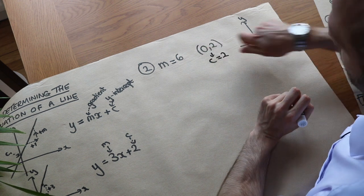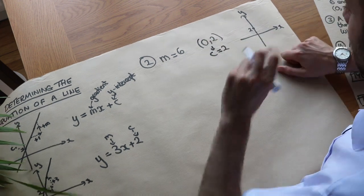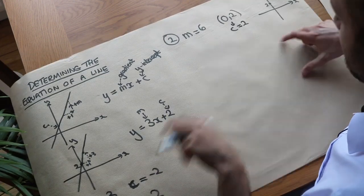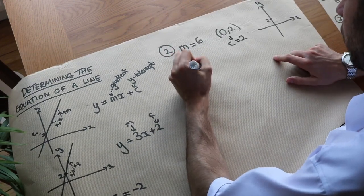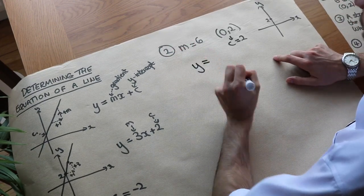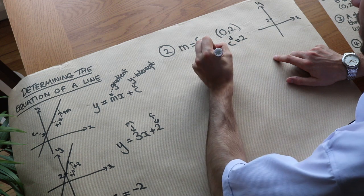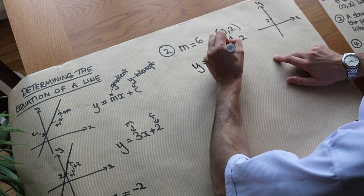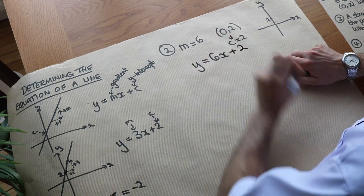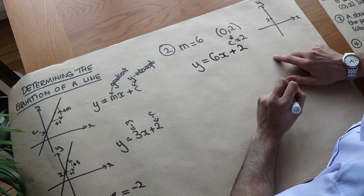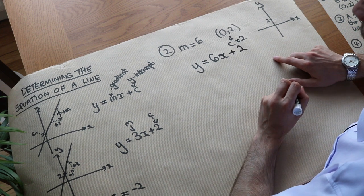That was only because the x value was 0 in this case. So again we can say y equals mx, which is 6x, plus c, which is plus 2. And that would be the equation of that line.